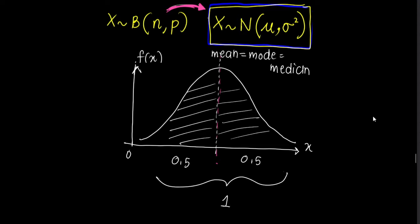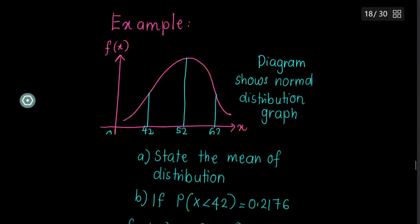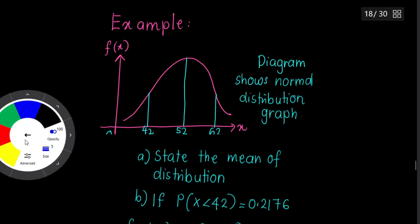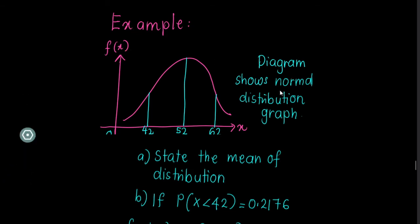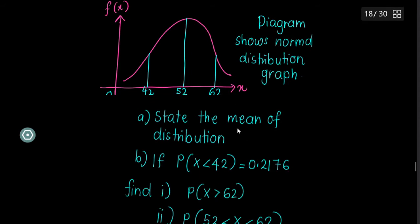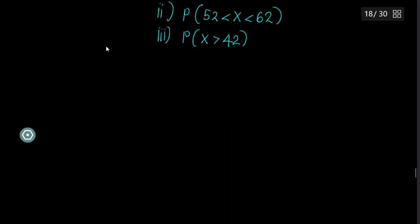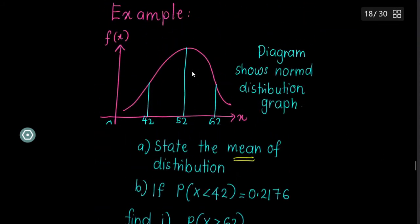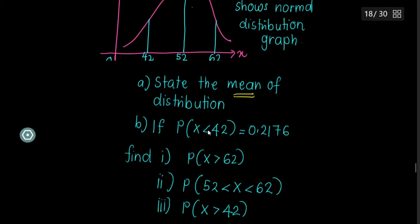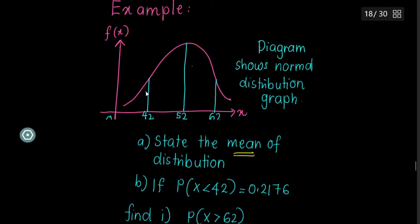Let's look at this example. A diagram shows a normal distribution graph for a continuous random variable. State the mean of the distribution. The mean is always the middle value, so the mean is 52. Next, you are told the probability of X smaller than 42 is 0.2176. Take note — P(X < 42) means this left part equals 0.2176.